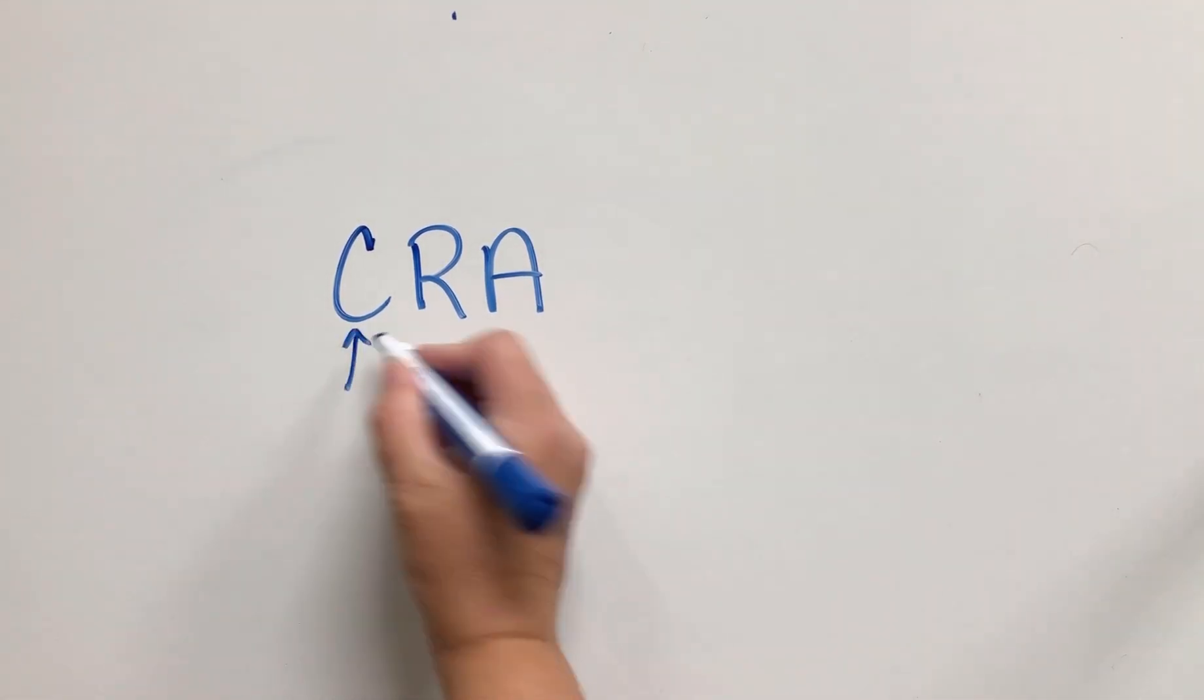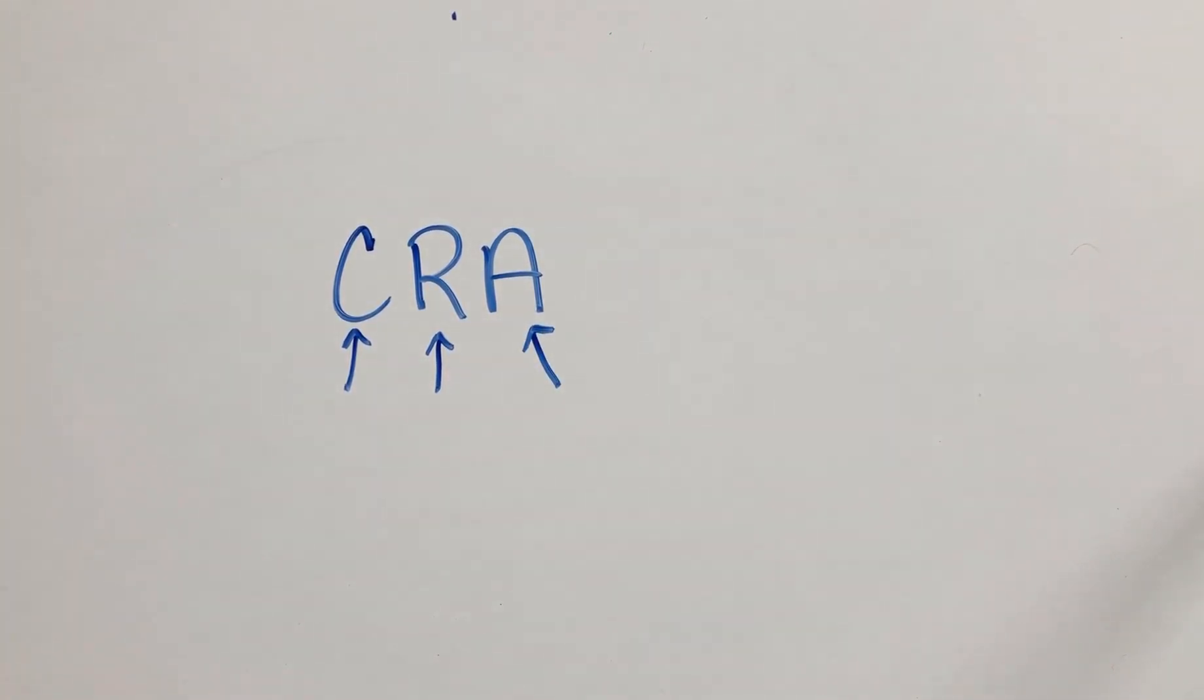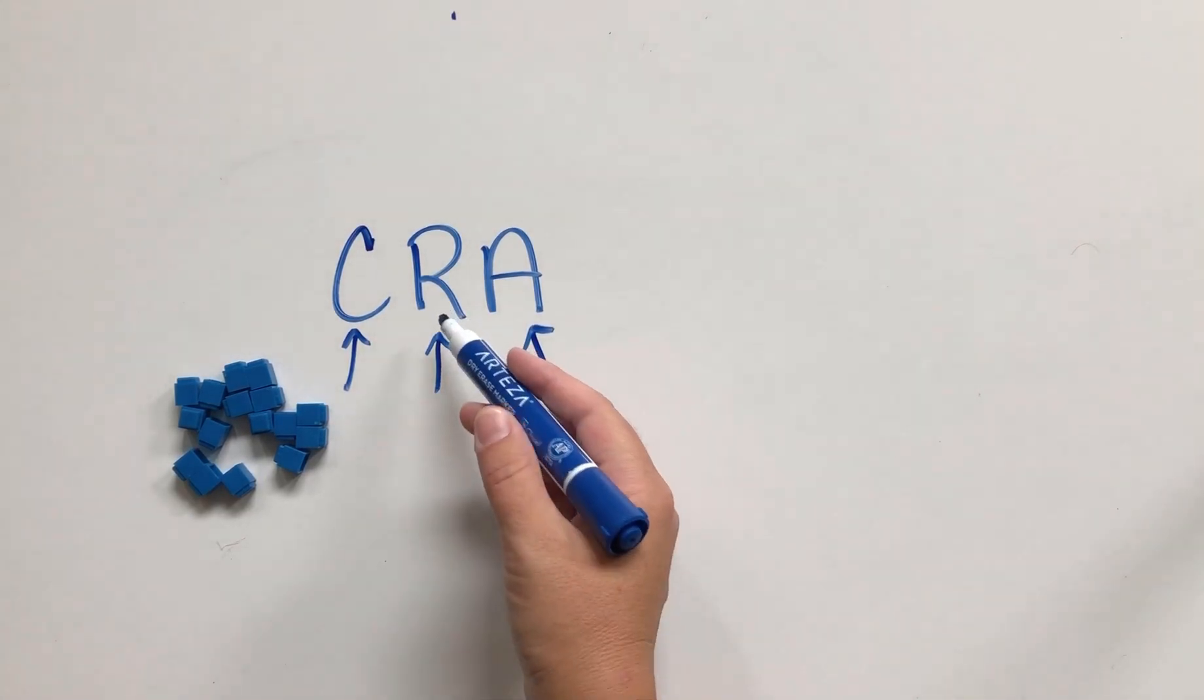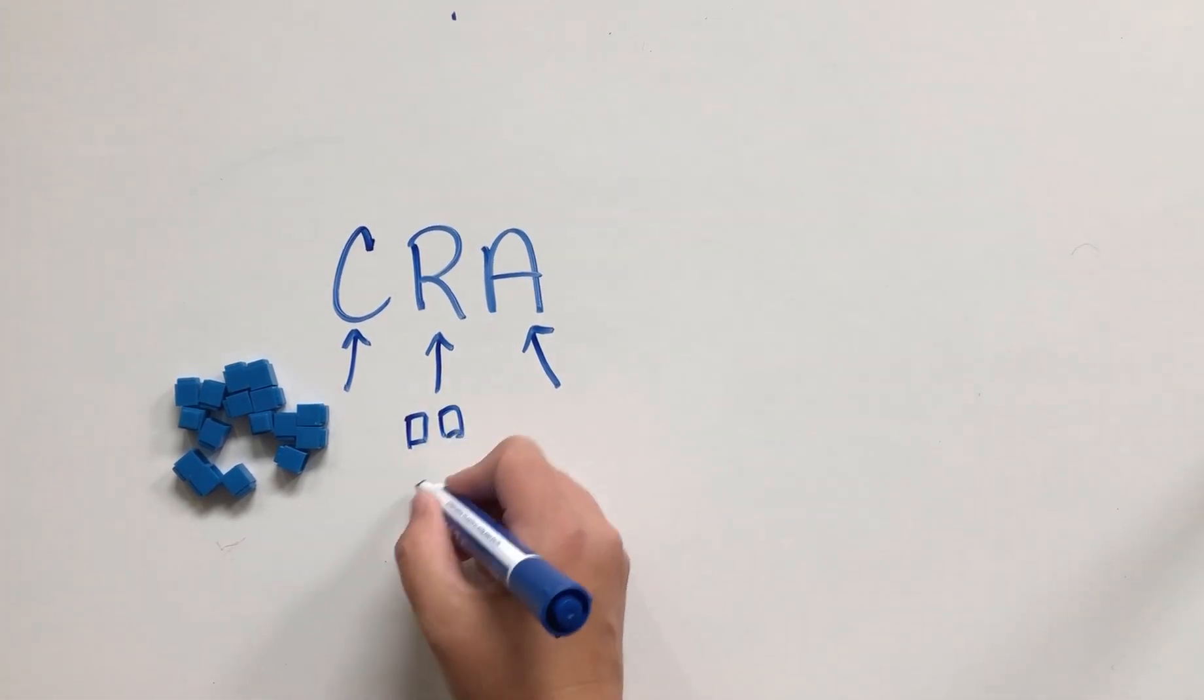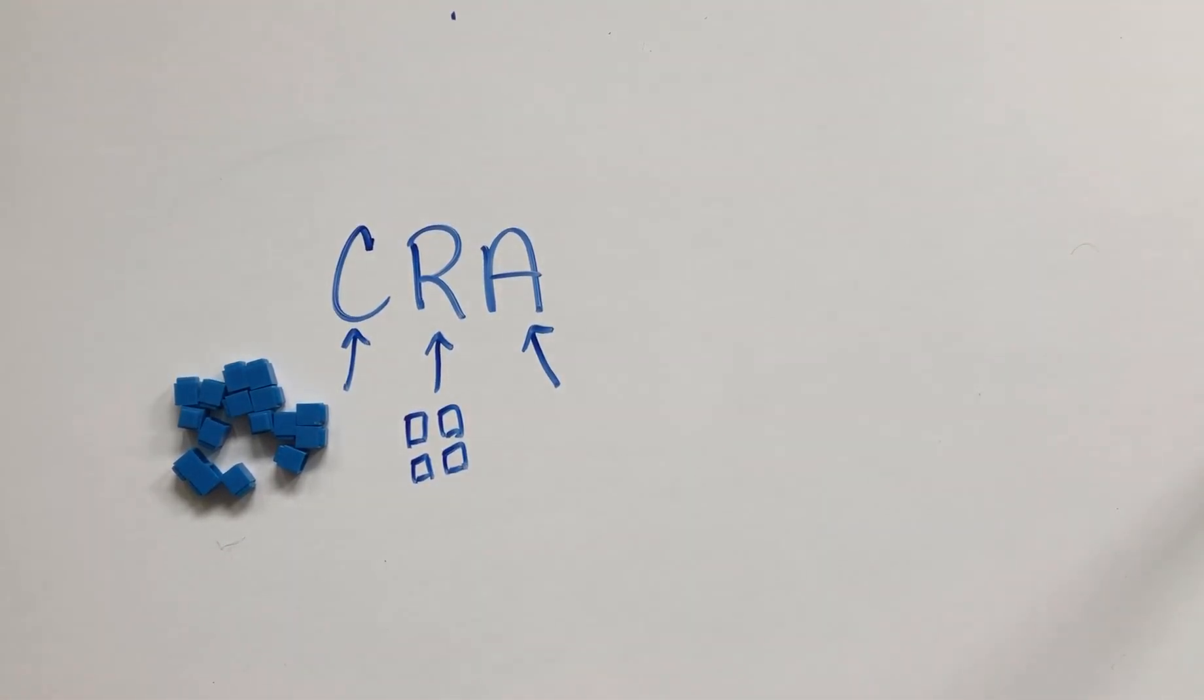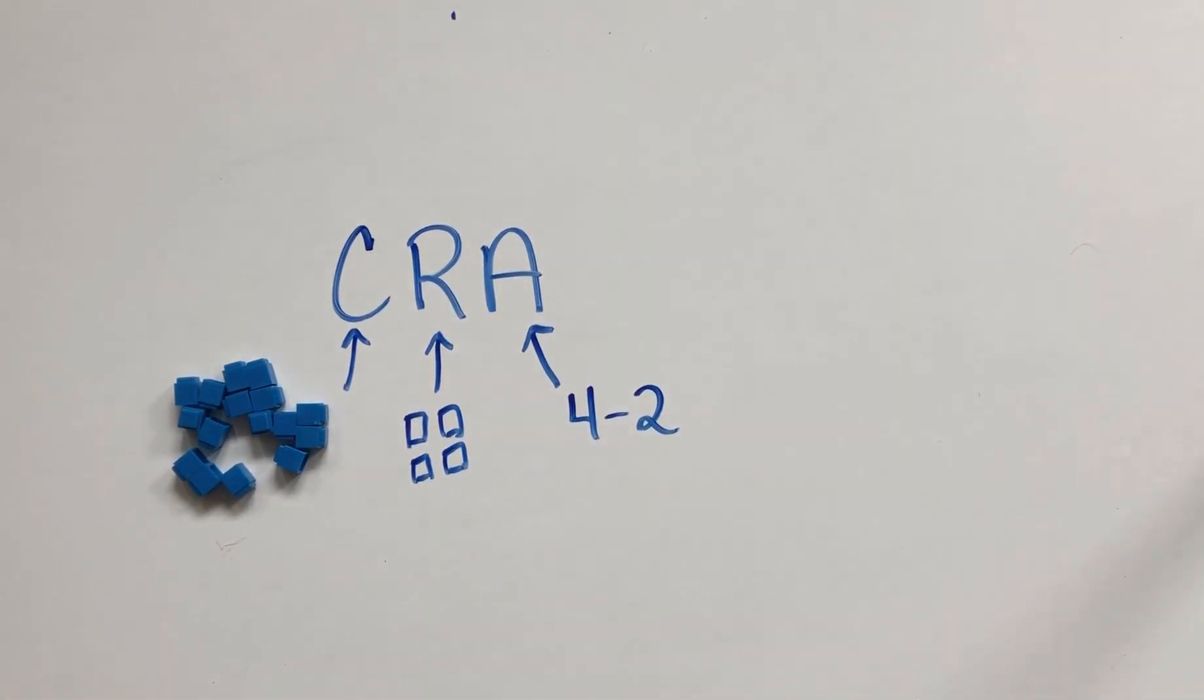C is concrete, R is representational, and A is abstract. Concrete means starting with hands-on manipulatives—things that we can touch and move and manipulate. Representational is when we are drawing a representation of those items. And abstract is when we're actually working with numbers and symbols.